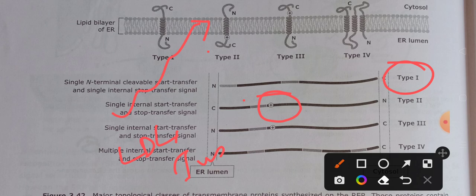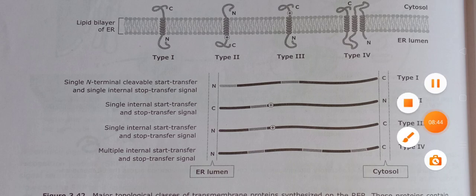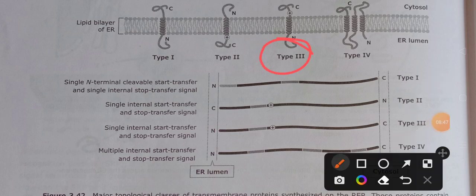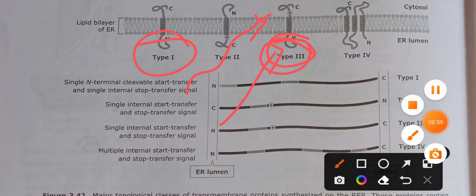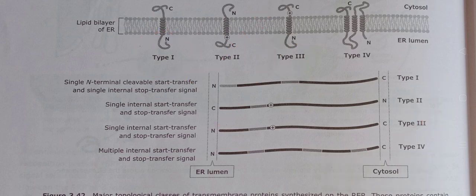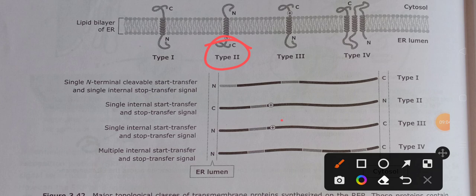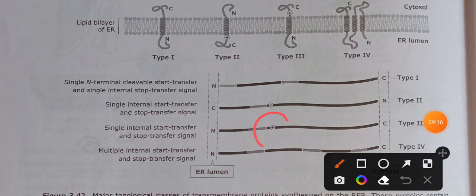Type 3 transmembrane protein has the same orientation as Type 1: N-terminus at the ER lumen side and C-terminus at the cytosolic side. Like Type 2, it has only one signal sequence that acts as both start-transfer and stop-transfer signal sequence.